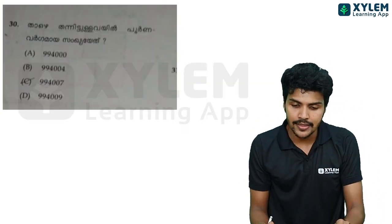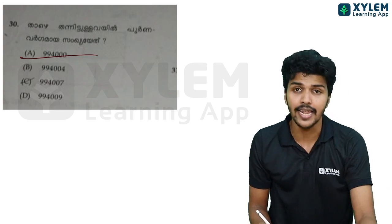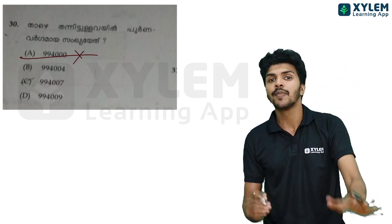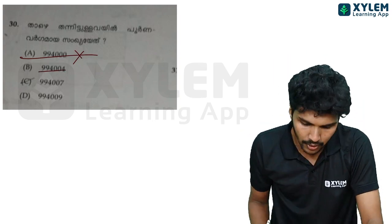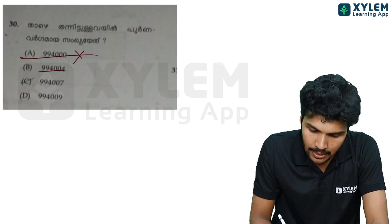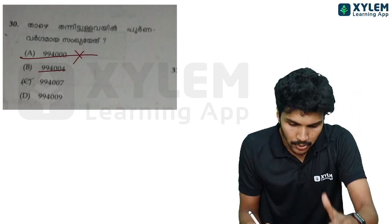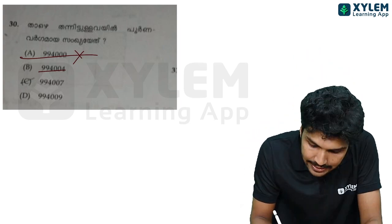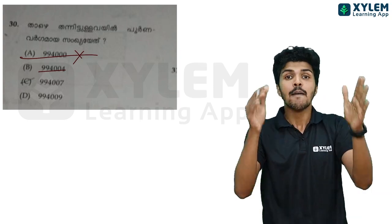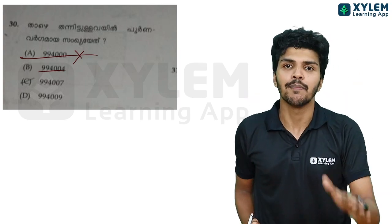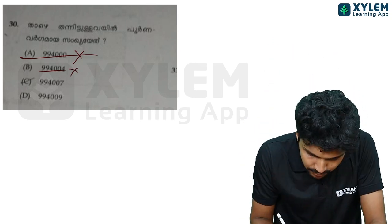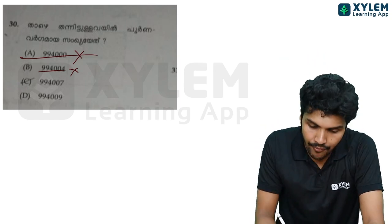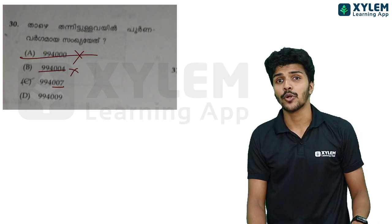Next question, number 30. What is the right answer? The perfect square — the sum of digits and the sum of the number is given. The number is 994,007 and the last digits are 0007.